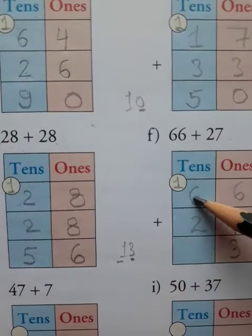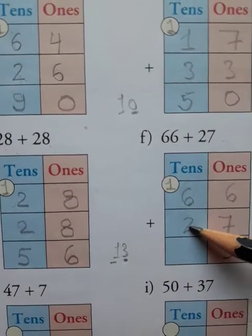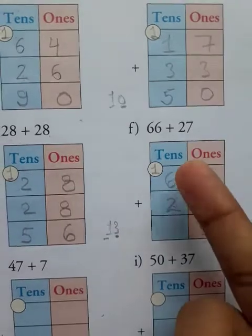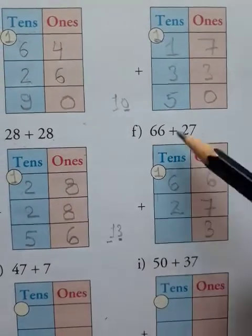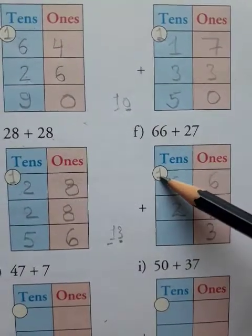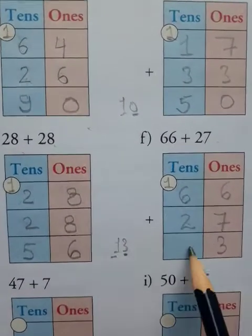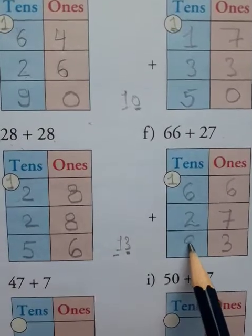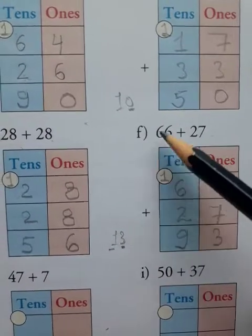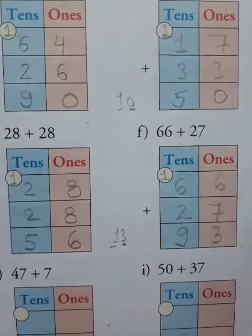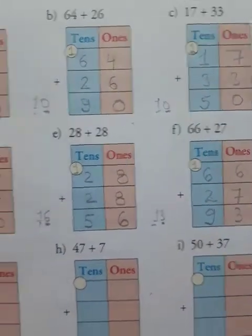In the tens place: 6 plus 2 is equal to 8. Now you add this carry also: 8 plus 1 is equal to 9. It means 66 plus 27 is equal to 93.